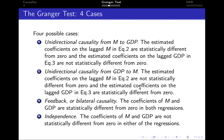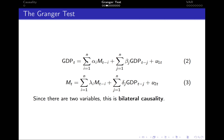There are four possibilities. We can either have unidirectional causality from m to GDP, which means that the estimated coefficients on the lagged m in equation one are statistically different from zero, and the estimated coefficients on the lagged GDP in the second equation are not statistically different from zero. So in this case, alphas will be statistically significant and deltas will be statistically insignificant.